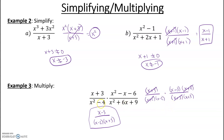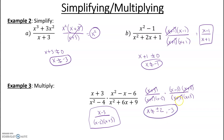Let's talk about domain restrictions. Always look back to the original — or the factored original before you cancelled anything. We know X cannot equal two or negative two, and it cannot equal negative three, because negative three plus three is zero. You always want to look back to the original before you cancelled anything, because in the original you can't have a zero in the denominator, even before you multiplied.